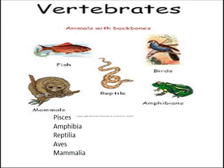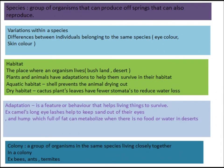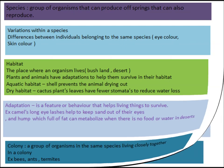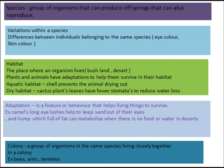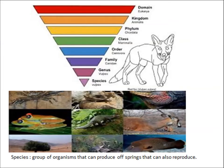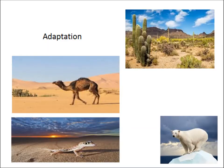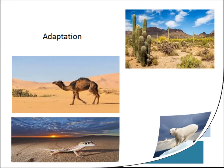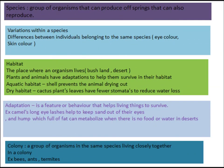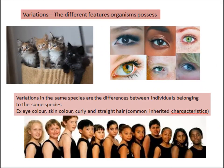Now let's clarify some key terms. Species are groups of organisms that can produce offspring, and their offspring can also reproduce. Lions and tigers do not naturally interbreed, so they belong to two different species. Adaptation is a feature or behavior that helps living things to survive — for example, a camel's long eyelashes and hump are adaptations.